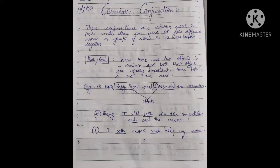Correlative conjunctions are words that help join two sentences or groups of words together. But what makes them 'correlative' is that they relate to each other - they are always used together, never separately. Unlike coordinating conjunctions, these are words that come in pairs to join two or more words or groups of words in a sentence.